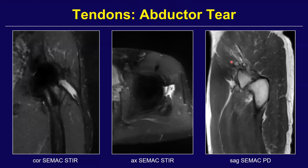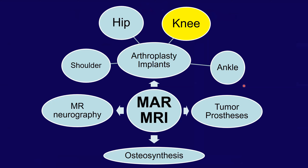Other advantages of MRI include evaluation of the abductor mechanism. Here's a hip resurfacing arthroplasty with a defect through the abductors, and on coronal and sagittal images we can show the size of these defects — which can sometimes be fixed arthroscopically.